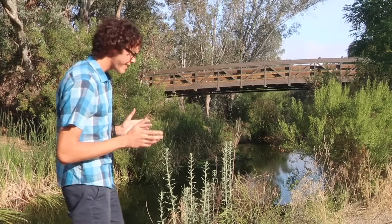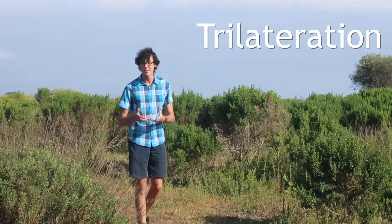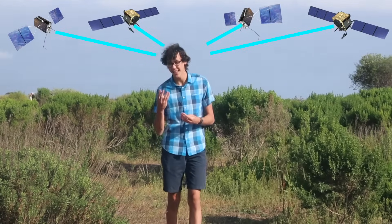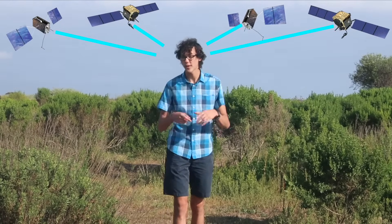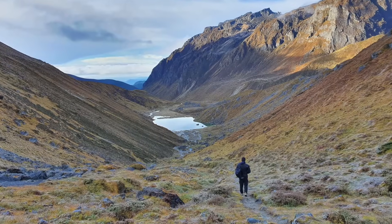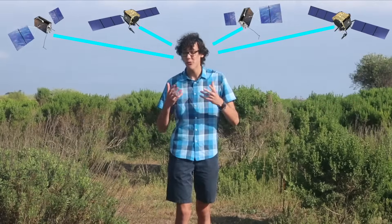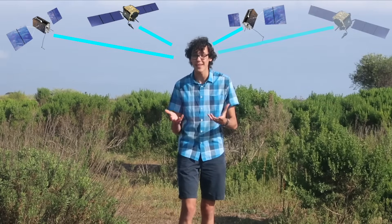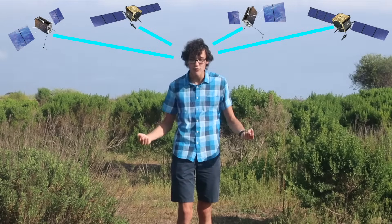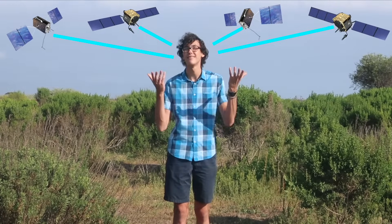But how does sending 24 satellites into space tell you anything about where you are? Your phone or GPS device uses a process called trilateration to determine your location. You need to receive a signal from at least four different satellites. The reason there are 24 satellites in orbit around the Earth is so that no matter where you are, you can always get a signal from at least four different satellites. Also, considering that radio waves can't travel through the Earth, the satellites need to be above you.